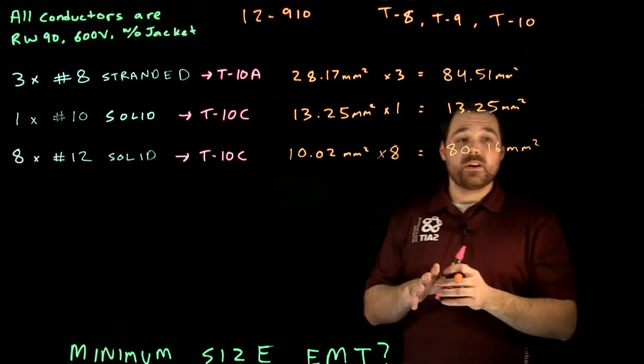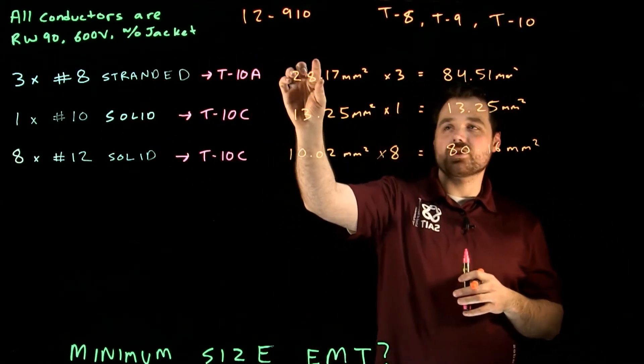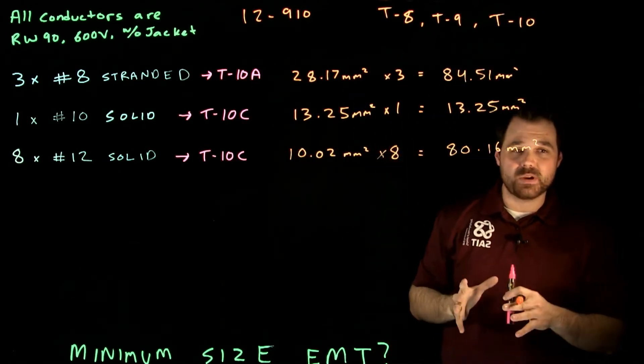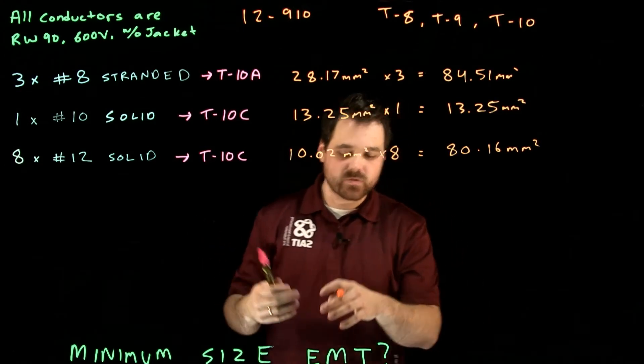So that's the math to figure out our conductors. How much a single conductor takes up multiplied by the amount of conductors gives us how much space we require for all of that size of conductor.